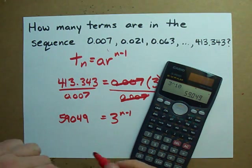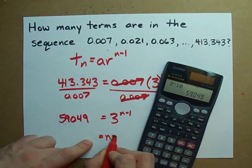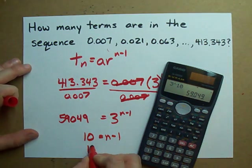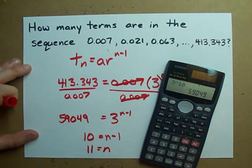So that means that n minus 1 is 10. And to solve for n, obviously we just add 1 to that side. n turns out to be 11.